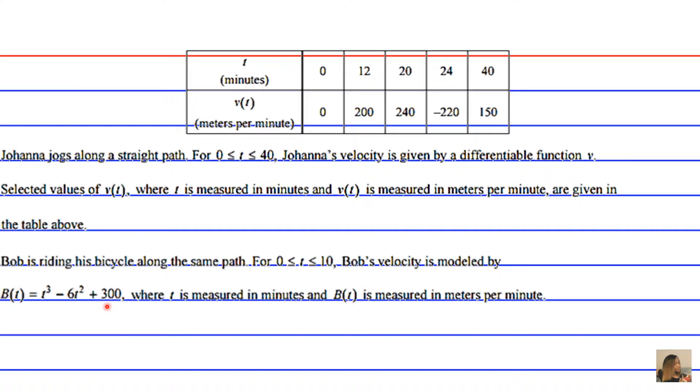Notice that we're given a modeled equation for Bob whereas we're given selected values for Johanna, where t is measured in minutes and b of t is also measured in meters per minute. So we're given Bob's velocity. If we input a time t we're going to be given his velocity, and the times that we're allowed to put in where this model will hold true are times between zero and ten minutes inclusive, meaning you can put in zero or ten minutes as well.